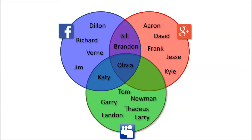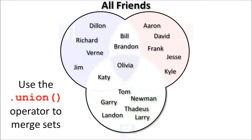To combine these sets, I can use the union operator, which will return a single set containing all of the items from the input sets. Since all items in a set must be unique, we lose any duplicates so that the resulting set will only have one of every item.